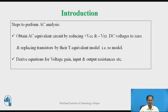Now let us start with the definition of AC analysis. Whenever any electronic circuit or amplifier is analyzed considering only AC voltage and AC current, that is called AC analysis. By doing AC analysis, we can obtain the values or the equations for basic electrical parameters of that electronic circuit, like an amplifier.